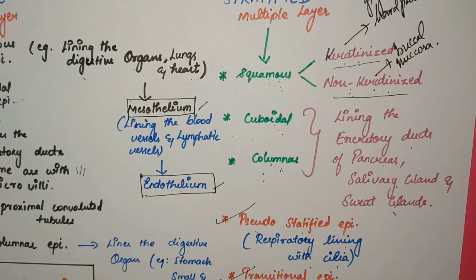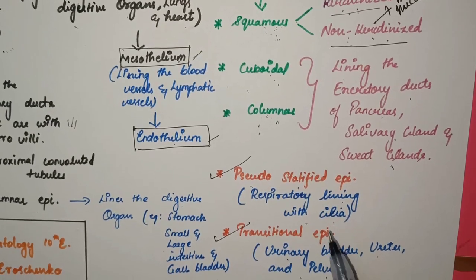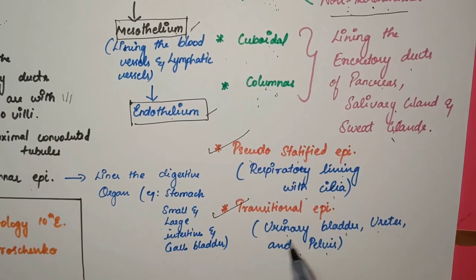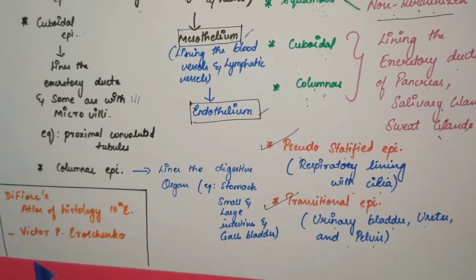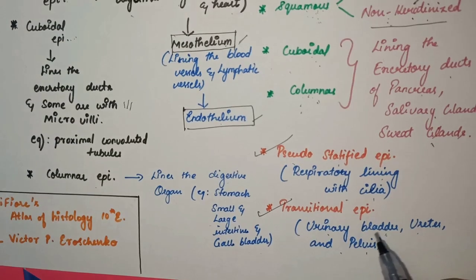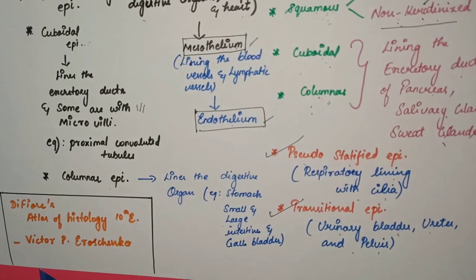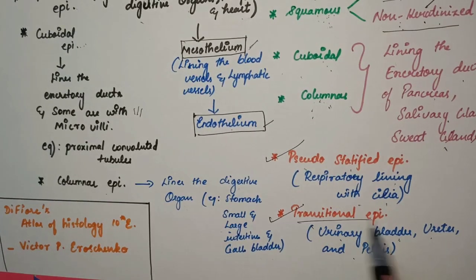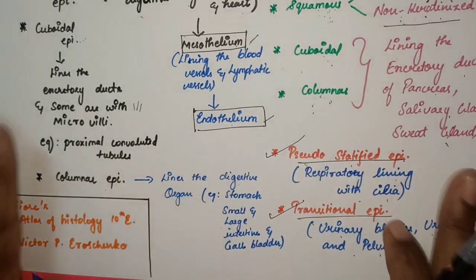Stratified cuboidal and columnar epithelium line the excretory ducts of various systems. The two additional specialized variants are pseudostratified epithelium — which has cilia and is seen in the respiratory lining — and transitional epithelium, which lines the urinary bladder and ureter. When contracted it shows a dome shape; when stretched it appears squamous. That is the specialty of transitional epithelium.